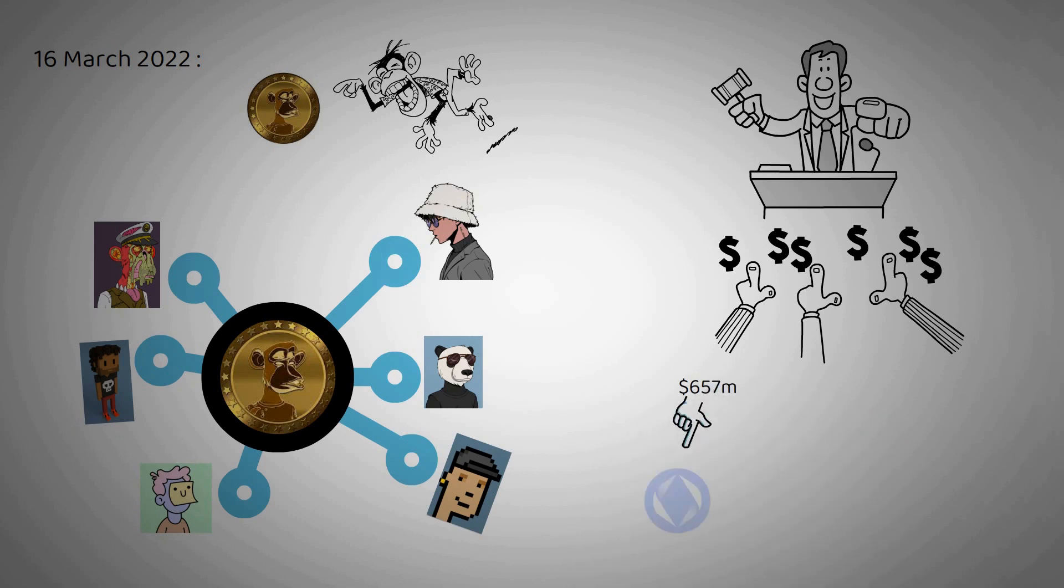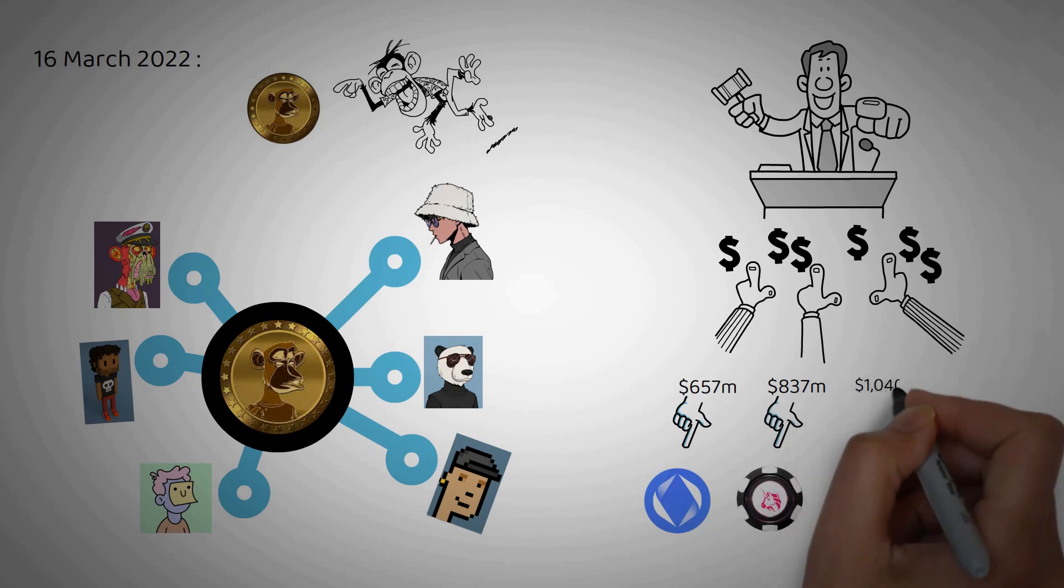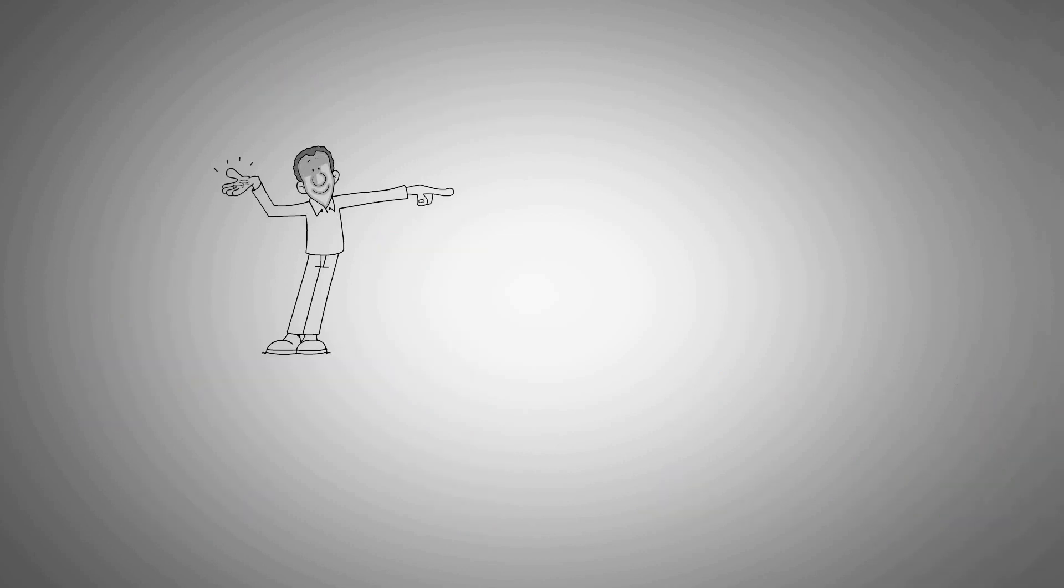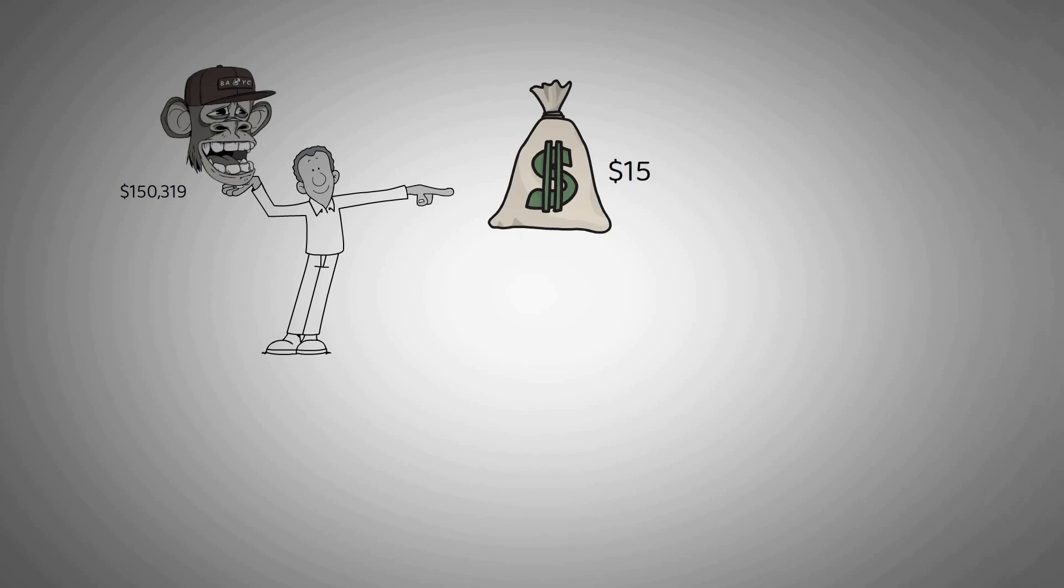$657 million in ENS, $837 million in DYDX, $1040 million in UNI and an overwhelming $1578 million in Ape were airdrops. If I had one BAYC NFT, I could have received $150,319.